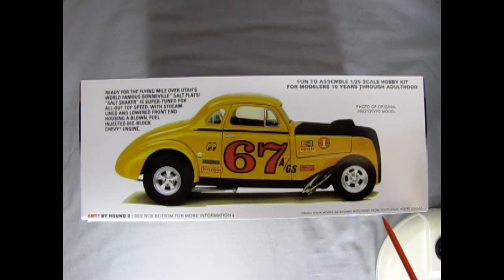So here we can see a look at the decals. This is a number 67 AGS Gasser type car. Iski cams, Champion, Simpson, Mallory, Firestone, Krager and Moon Eyes and it is painted in a yellow Moon Eyes paint color.